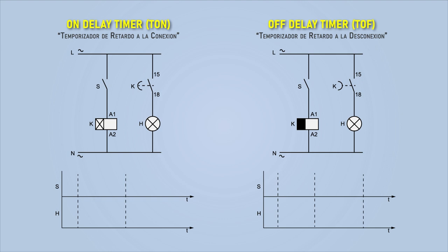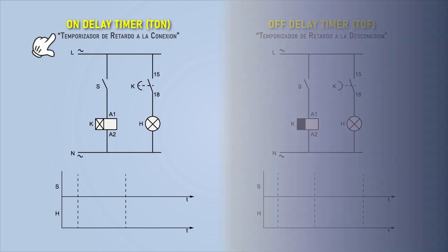First, let's define and see the differences between a delay on timer and a delay disconnect timer. Timer on delay, known by its abbreviation TON, allows connection to the circuit by switching its contacts after a certain time after the activation signal has been generated.